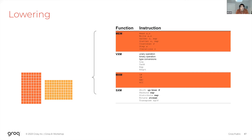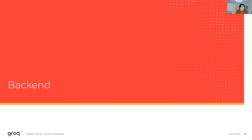On a traditional architecture the compiler's work would be done — the target hardware could take the compute instructions and run them. However, this isn't the case for the Grok chip. At this stage we know what we want to do, what type of functional units we need, what instructions they will call, and the data dependencies between instructions. However, we are still missing the when and where, and this is where the back end comes in.